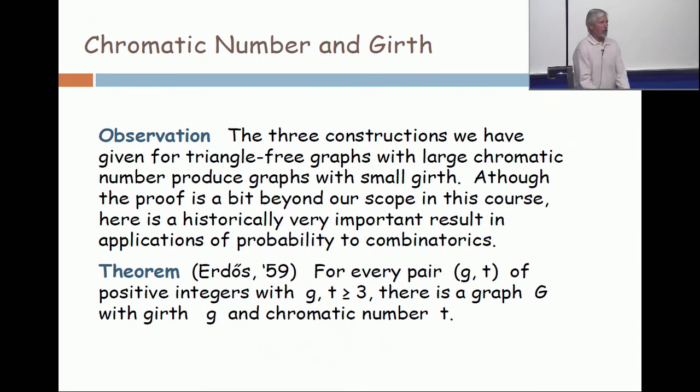So think about what such a graph with girth being 100. The smallest cycle is 100. If you're standing on a vertex and looking around you, all you see is a tree. I go out on this path, go out on that path, go out on this path. I don't see any way to get back because I can't see that far. In order to get back, I have to go out at least 100. So locally, it looks like a tree.